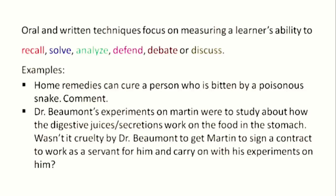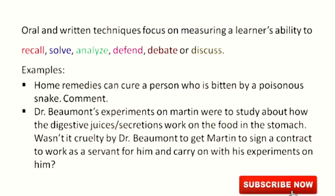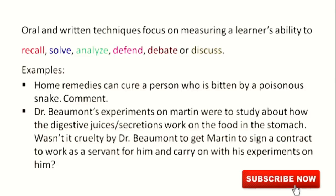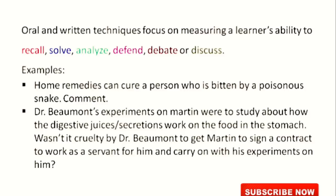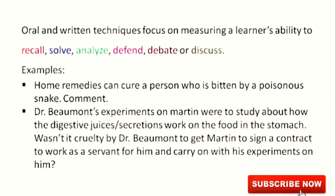There are two examples listed here. The first example says Home Remedies — that remedies at home can cure a person who is bitten by a poisonous snake, and the learner has to comment on this. The learner has learned in class about different types of snakes and knows the meaning of a poisonous snake. So he would recall information, do some analysis, some discussion, and then defend.